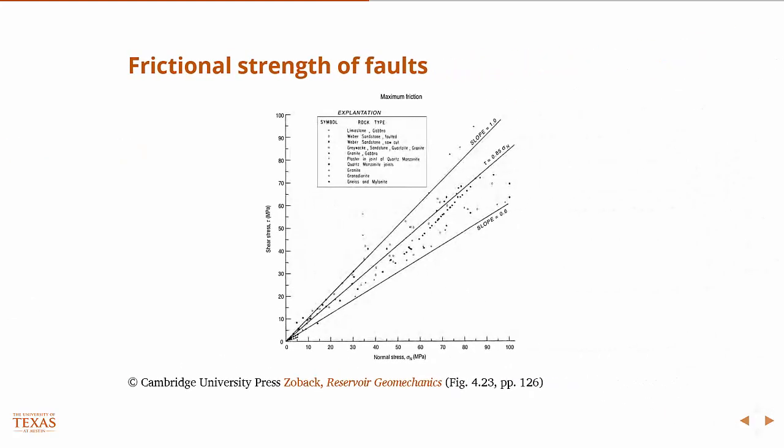So here's a range of data. This is a little hard to see, but all of those dots represent friction tests done on different types of rocks. And what we can see is that in virtually no scenario—if you can't read this, this is the normal stress versus shear stress—in almost no case is this friction coefficient, which would be the slope here, less than 0.6.